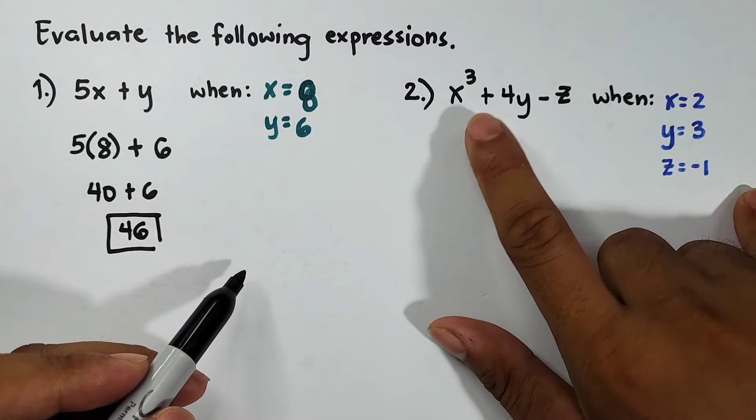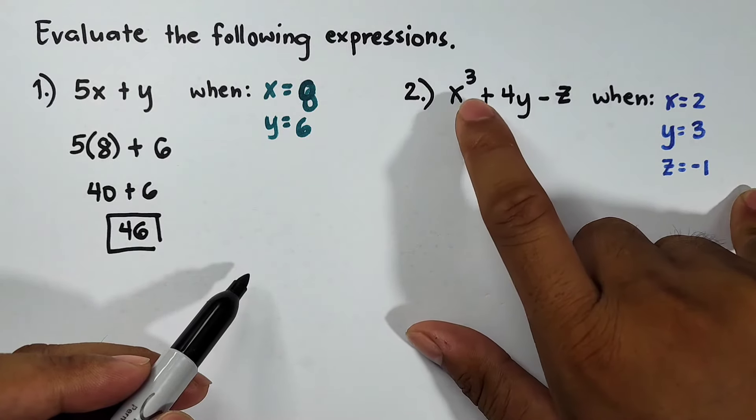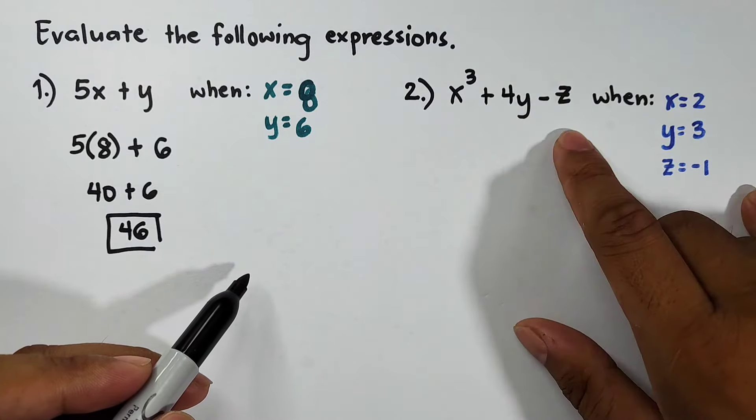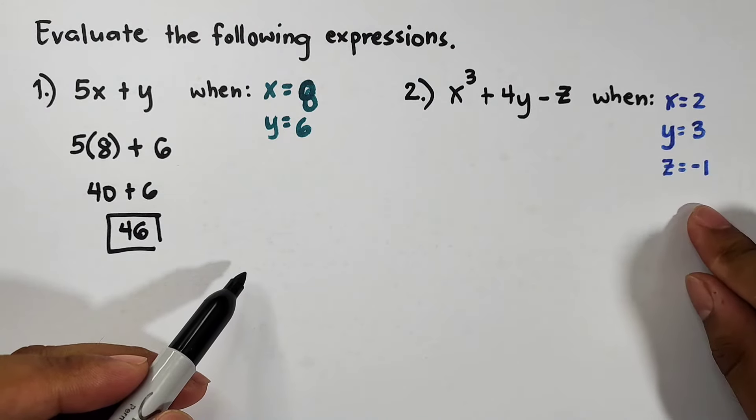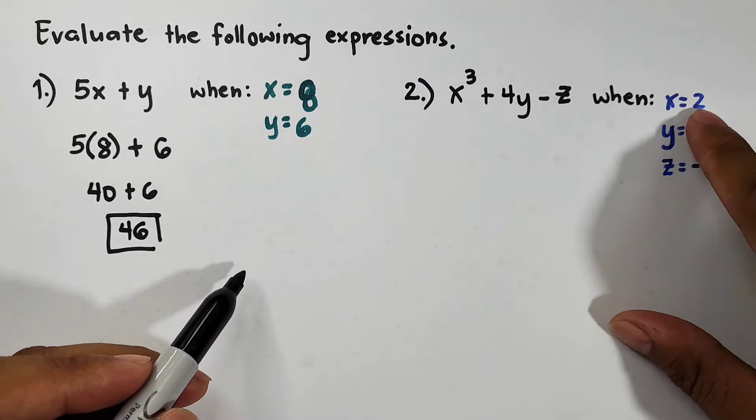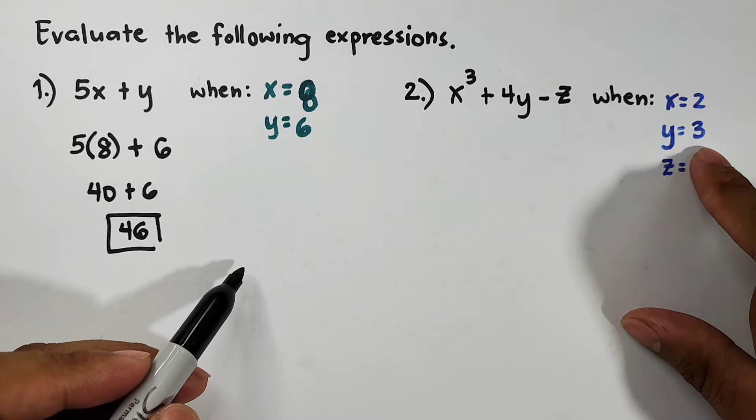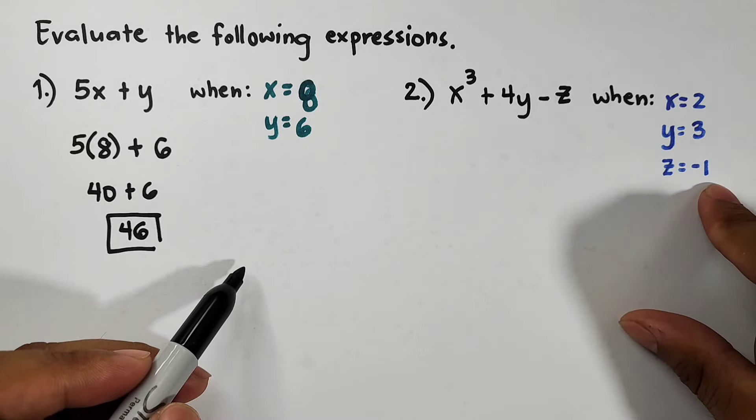In number 2, what we have here is x cubed plus 4y minus z, wherein as you can see it involves 3 different variables. Your x is equal to 2, your y is equal to 3, your z is equal to negative 1.